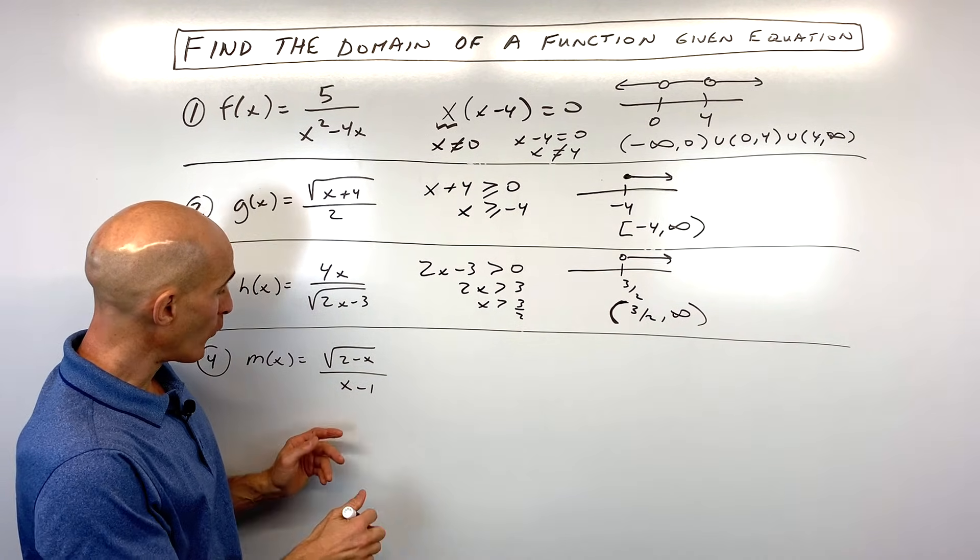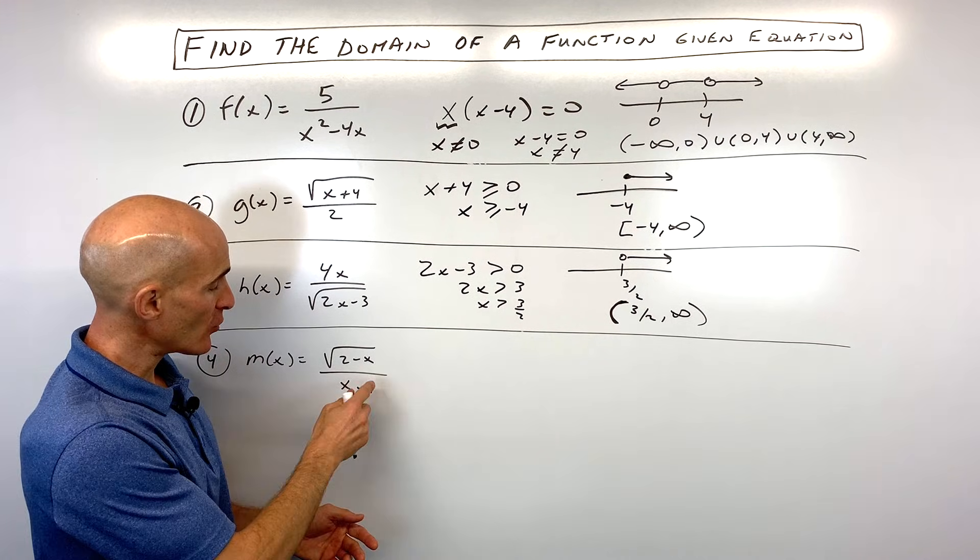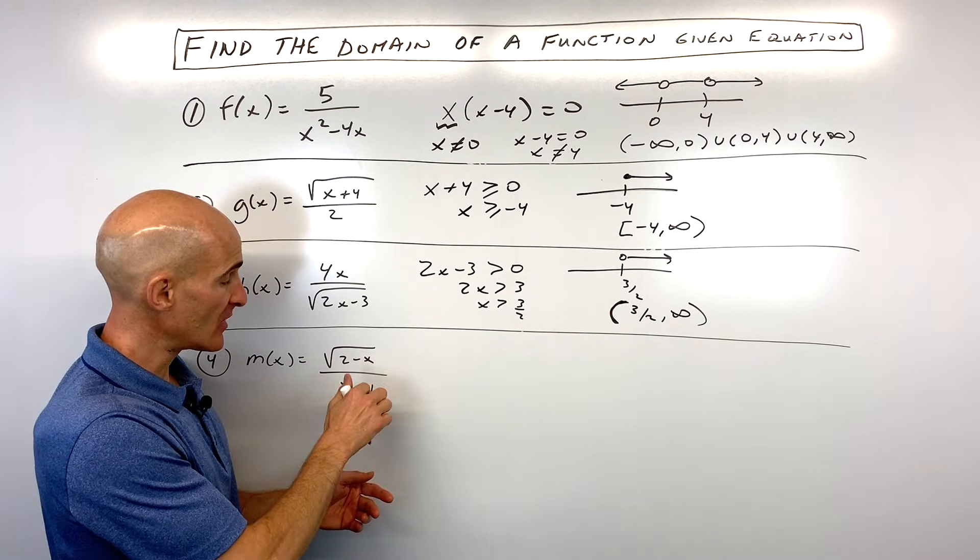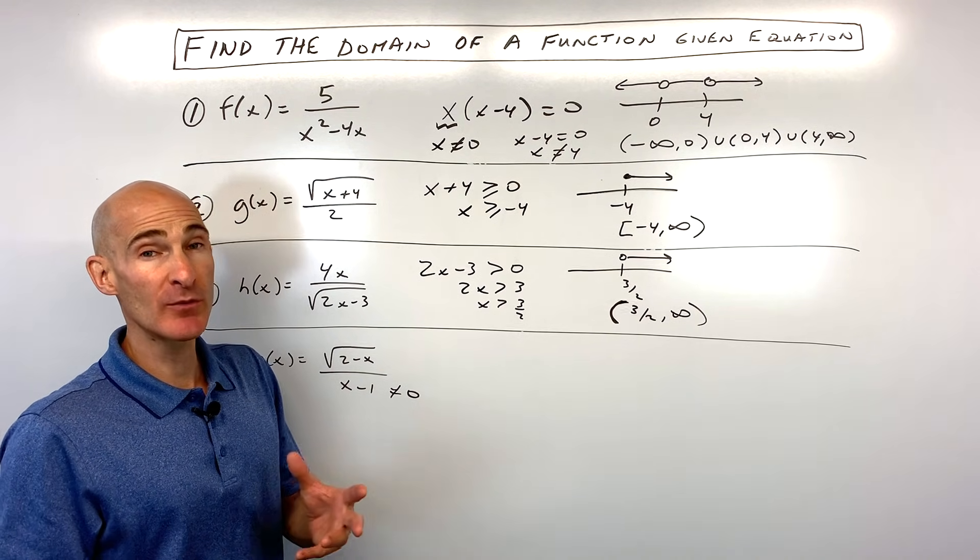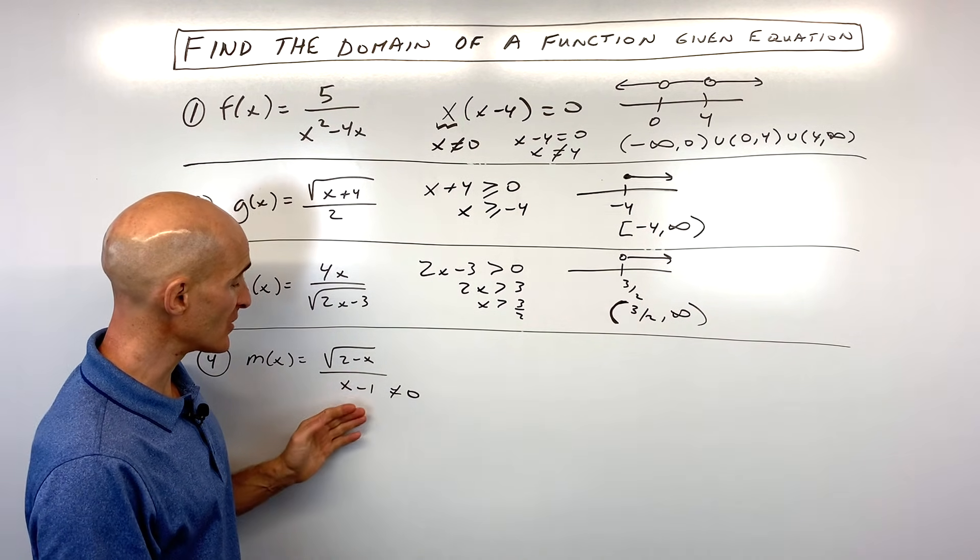And then the last one, number four, you can see we've got a couple things going on here. We have a fraction, so we know the denominator cannot equal zero, right? And we have a square root. We can't take the square root of a negative number. So we're combining them together, the two different things to watch out for.